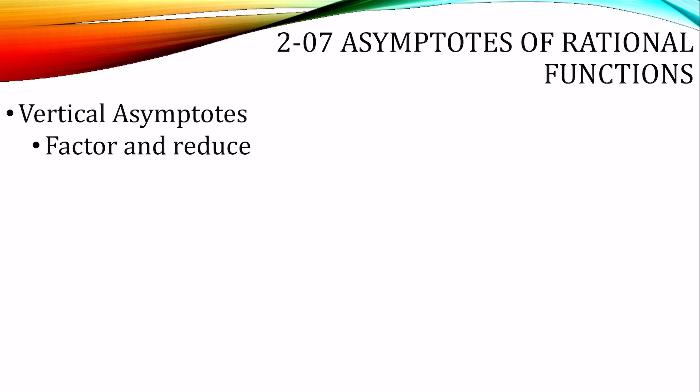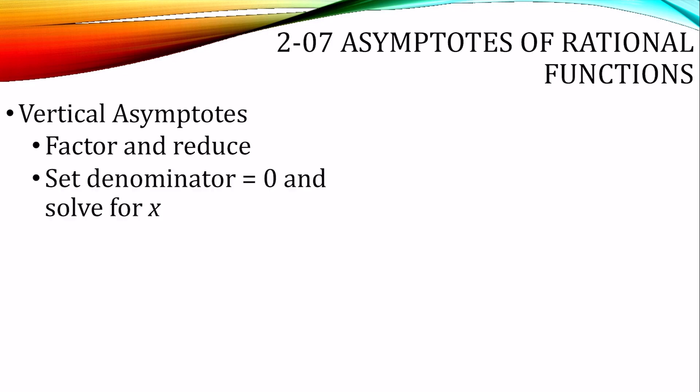To find the vertical asymptotes, you need to factor your function and reduce. Then you set your denominator equal to 0 and solve for x. So you factor first, reduce, and then with whatever's left, set the denominator equal to 0 and solve for x.